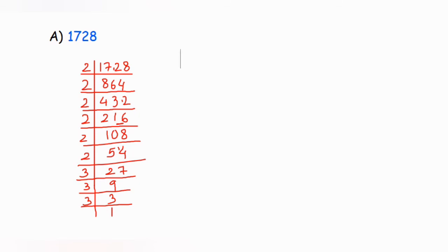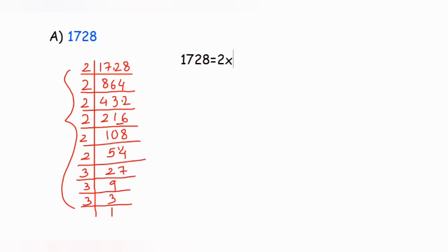Now we write 1728 as the product of all its prime factors. From the division, we got six twos and three threes. So: 1728 = 2 × 2 × 2 × 2 × 2 × 2 × 3 × 3 × 3.